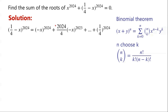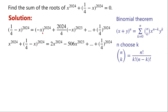Here, k equals 1, so n choose k equals n choose 1, which is 2024. The term x to the power of n minus k times y to the power of k gives (minus x) to the power of 2023, which equals minus x to the power of 2023.